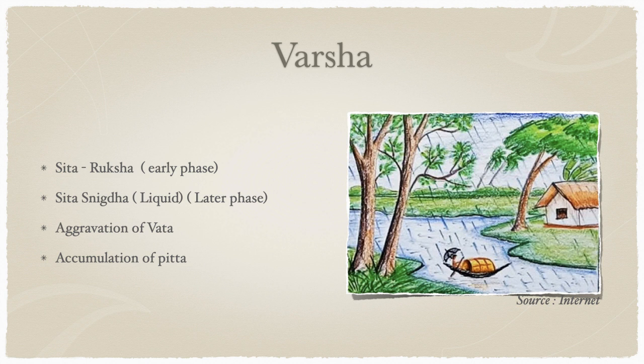In this season agni becomes very weak and everything becomes amla. The shita and ruksha nature is prominent in the beginning, causing disturbance in the body. Gradually as rains continue, water increases the snigtha nature of the whole environment, and in the later phase of monsoon it becomes shita and snigtha rather than shita and ruksha. This shita-snigtha nature at the end of monsoon is actually a preparation for the next ritu — it allows accumulation of pitta, because pitta is snigtha but ushna, and here it is only shita.